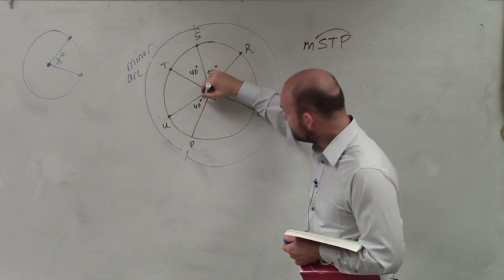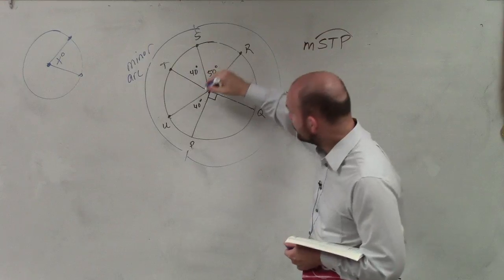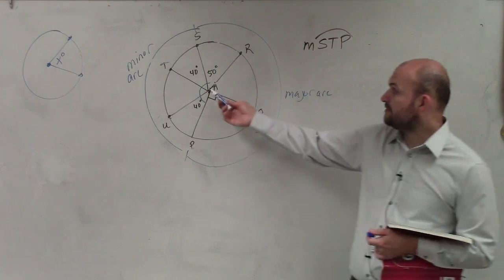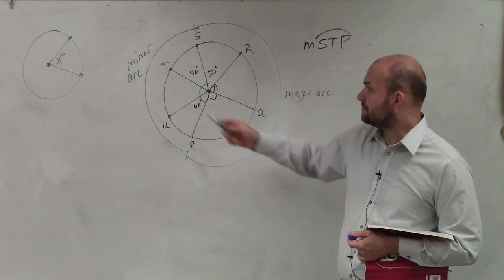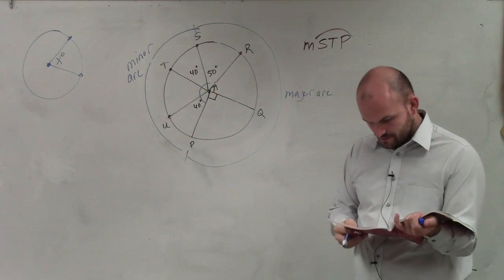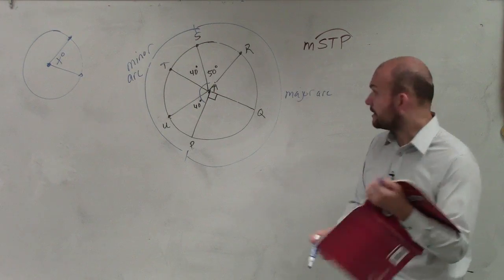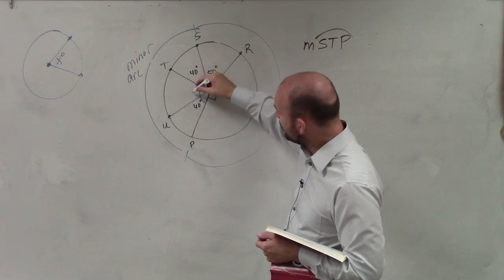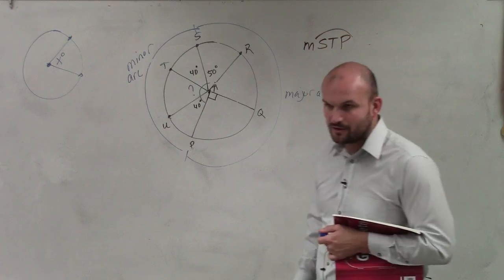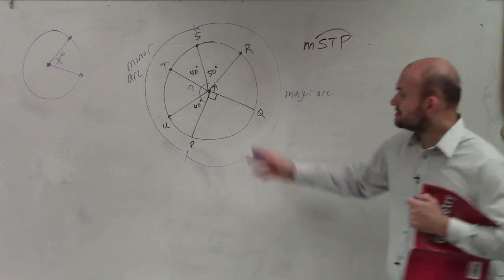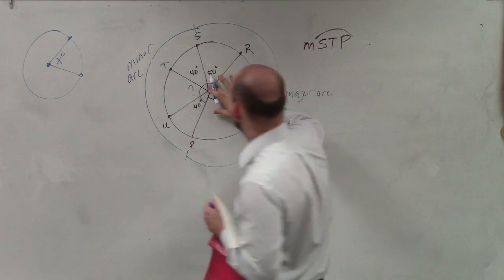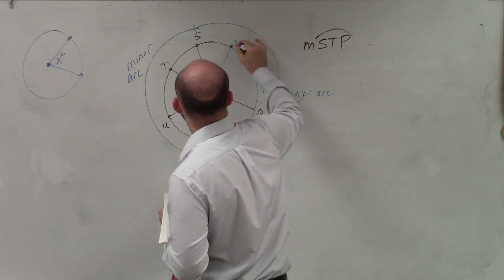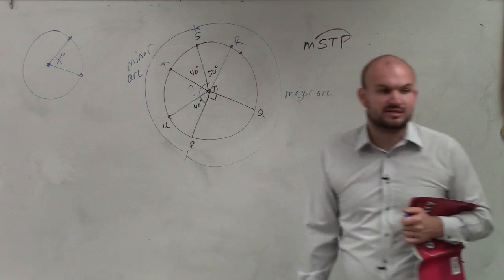Now on this one, since this is a minor arc, we need to figure out what that angle is. We know that angle is 40, and that's 40. Actually, I drew this wrong. No, I didn't. OK. We know that's 40, and that's 40, and that's 50. The thing we don't know is what is that angle.